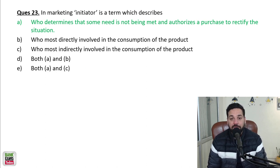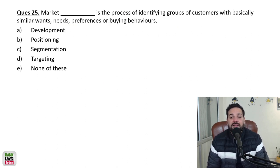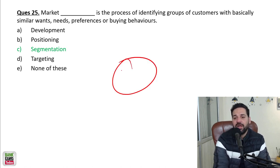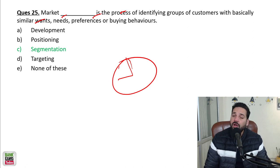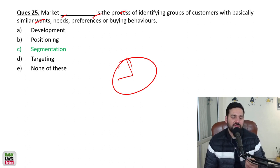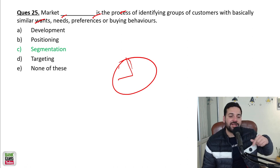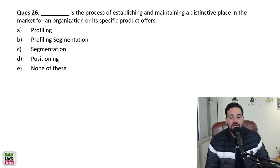Market segmentation is a process of identifying groups of customers with basically similar wants, needs, preferences or buying behavior. Market segmentation - you are basically dividing the whole market into parts, into segments. And how are you dividing the market? According to the similar wants, needs, preferences, buying behavior, features. According to that: educational qualifications, demography, a lot of factors can be there. You are going to segment or categorize the market. That is market segmentation.